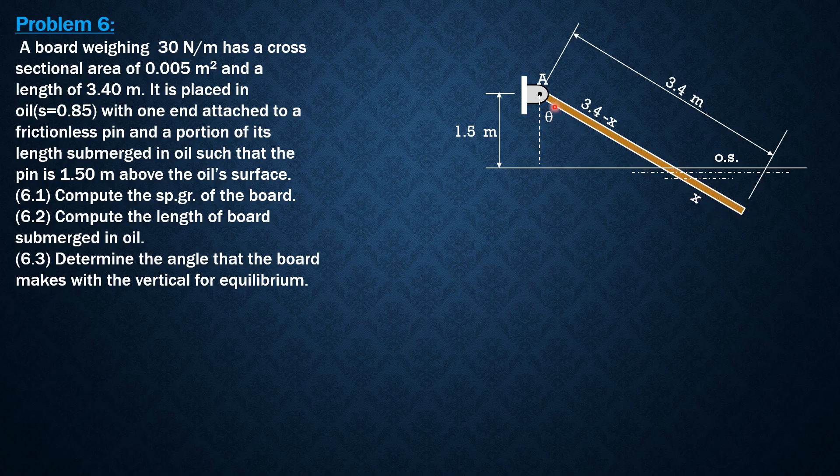We will denote the portion of the board that is submerged in oil as x. Therefore, the length that is not submerged from this intersection with the oil surface and the frictionless pin is 3.4 minus x.